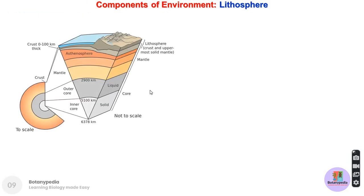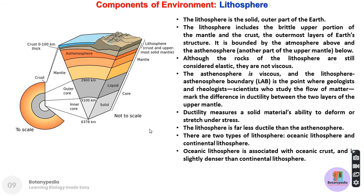Looking at the lithosphere, if you take a cross-section of the entire Earth, you can see it is divided into three parts: core, mantle, and crust. The lithosphere is the solid outer part of the Earth, including the brittle upper portion of the mantle and the crust. Brittle means easily breakable. The lithosphere comes from a portion of the crust and the topmost portion of the mantle.